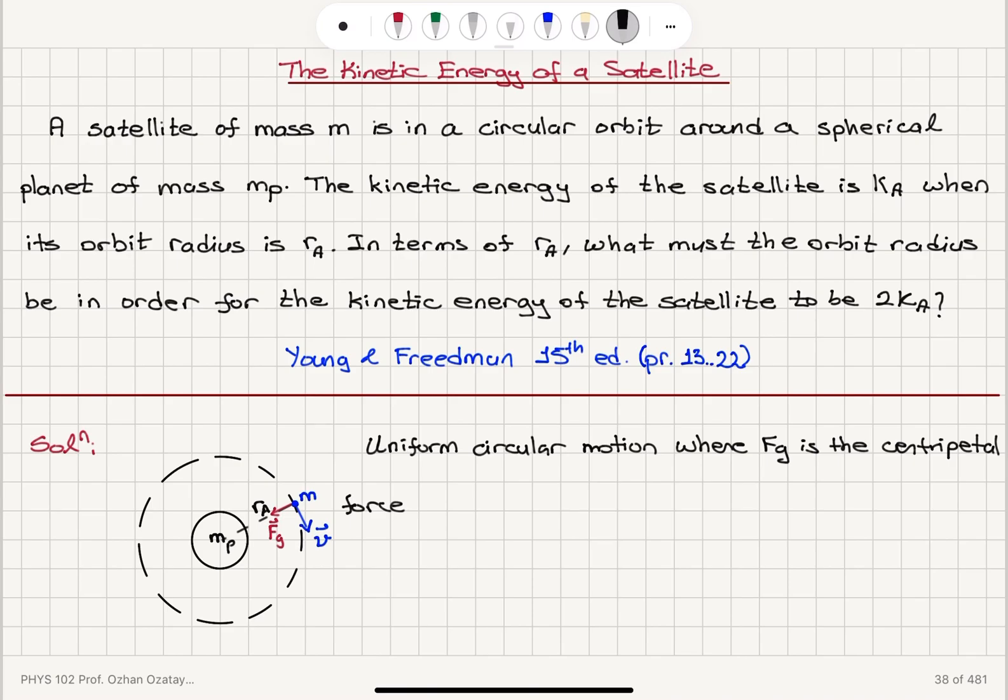If you write the gravitational force f g, which is a radial force, universal gravitational constant, mass of the planet, mass of the satellite, divided by r a squared, this must be equal to, in uniform circular motion, mass of the satellite times its speed squared v squared divided by r sub a. So these r sub a's will cancel.